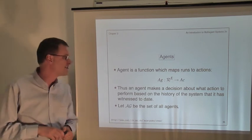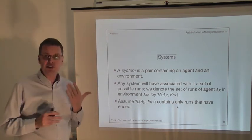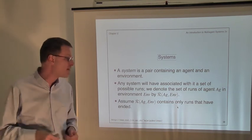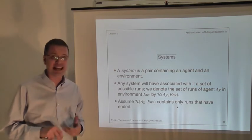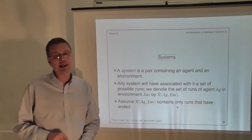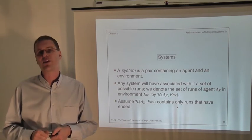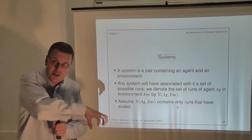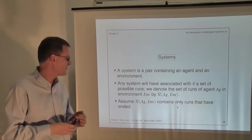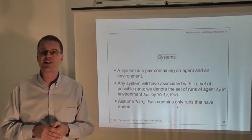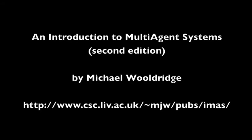So that's the basic model of agents and environments. When we talk about a system, we're talking about an agent together with an environment. When you put an agent in an environment, it will generate a set of runs — all the possible runs that could occur. There's more than one possible run because our environments are assumed to be non-deterministic: for the same action that an agent chooses, there are multiple possible outcomes, and hence multiple possible runs. We use the notation R of AG and ENV to denote the set of possible runs of our agent in the environment.